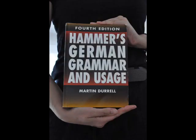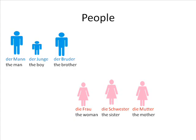So, the rules. Like in English, but with two exceptions, German nouns that refer to people and which by their nature specify the person's sex are always the natural gender. So 'Mann', 'Junge', and 'Bruder', which mean man, boy, and brother respectively, are all masculine, and 'Frau', 'Schwester', and 'Mutter', which mean woman, sister, and mother, are all feminine.